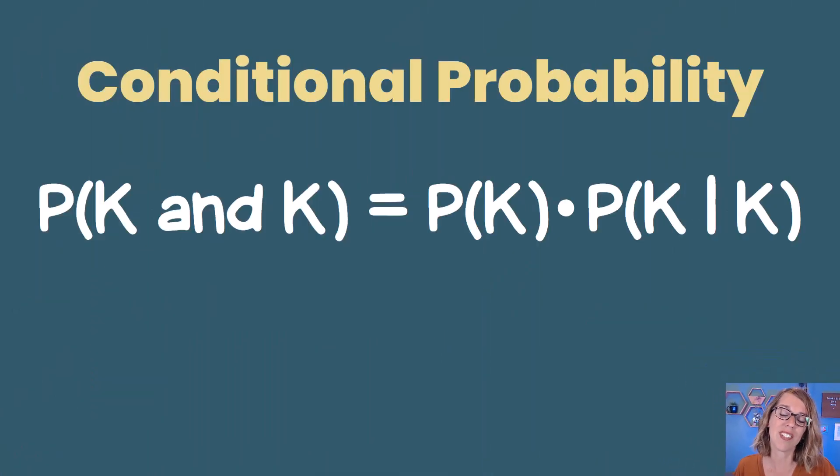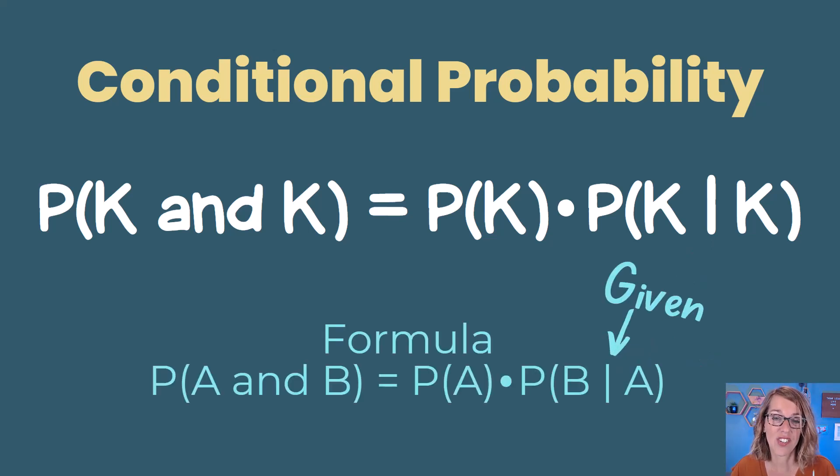Now for this example, we used conditional probability. This is when we're doing a probability for two events that are dependent on each other. So the probability of getting two kings is the probability of getting the first king times the probability of that second king given that the first was a king. In general, the conditional probability formula looks like this.